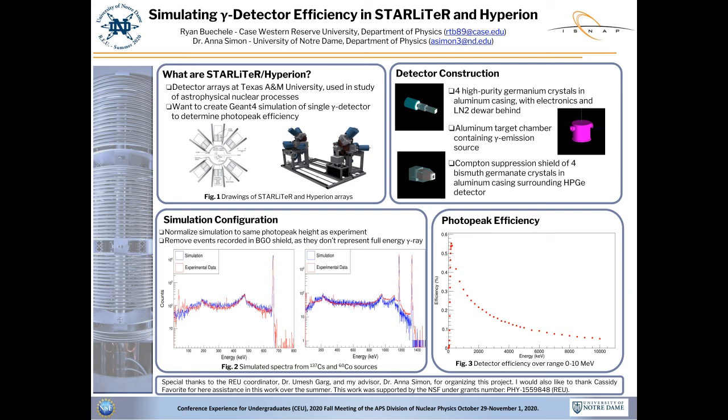The steady drop-off as energy increases can be attributed to gamma rays scattering more before being fully absorbed and some pair production, so a smaller fraction of gamma rays are totally absorbed in the germanium detector crystals. In conclusion, the simulation accurately reproduces experimental data for the gamma ray detectors in Starlighter and Hyperion. Going forward, the simulation can be developed further to include a full array of detectors and can then be adjusted to optimize the efficiency of the array. The simulation can then be utilized to suggest possible improvements to the detector array and make predictions for future experiments.